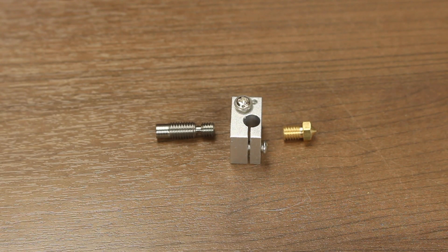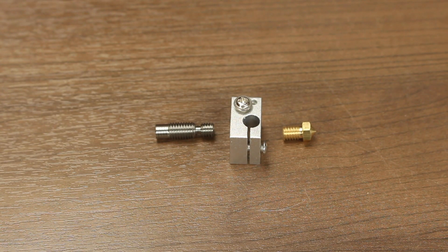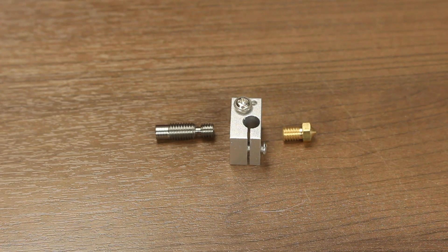One of the most popular and reliable hot end types is the E3D V6 style hot end. Here we have a version with an all metal heat break and a 0.4mm nozzle. Let's take a look at how to properly assemble this.